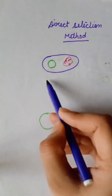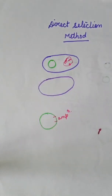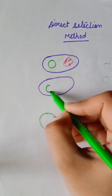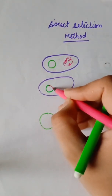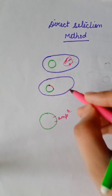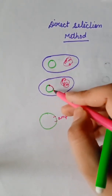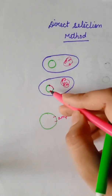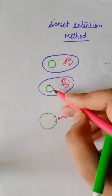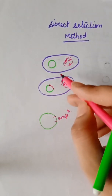Now consider another type of cell in which recombinant DNA is present. This is the recombinant DNA. Because this is the same plasmid in which recombination has taken place, the ampicillin-resistant gene is also present in this plasmid. So how do we select between these two types of cells?